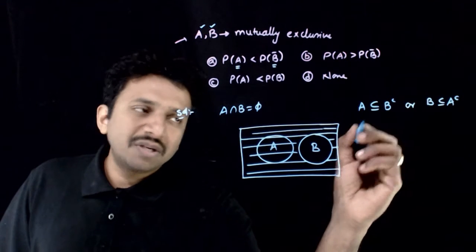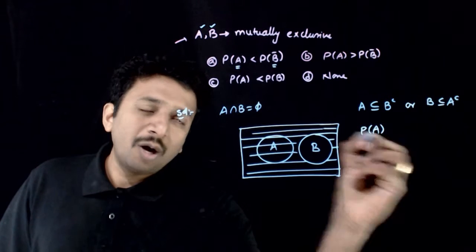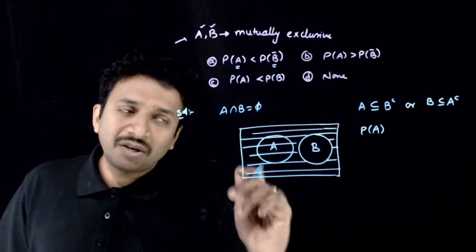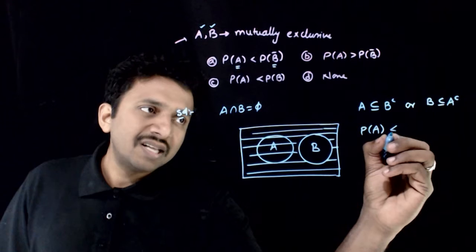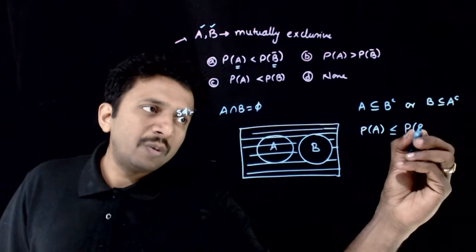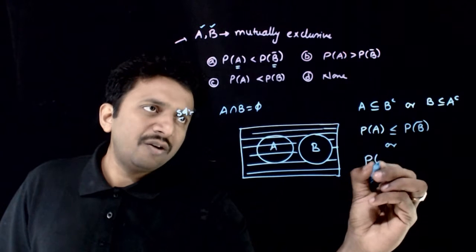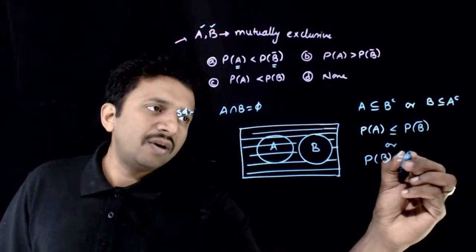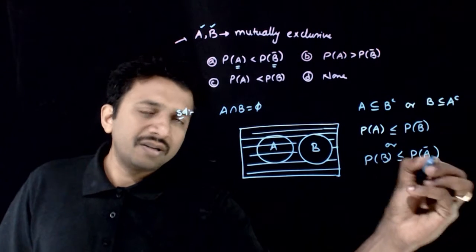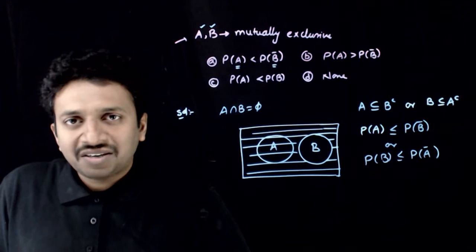If A is a subset of B complement, the probability of A is less than or equal to probability of B complement. Or, probability of B is less than or equal to probability of A complement. So one of these two has to be the right answer.